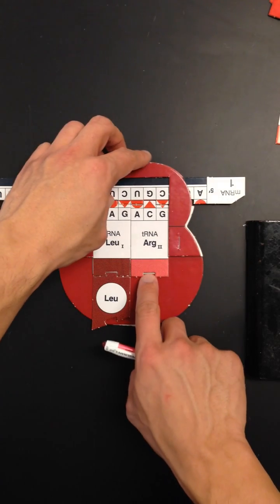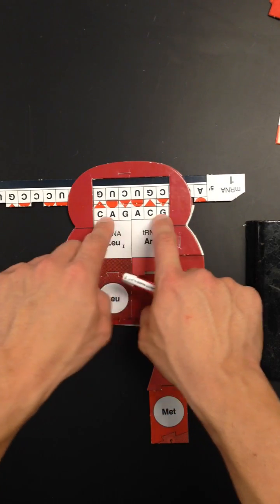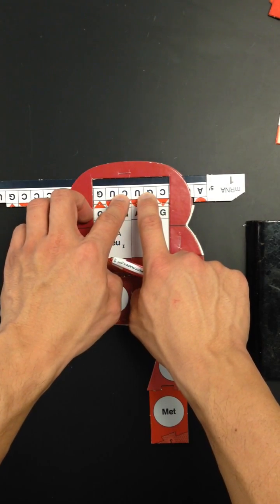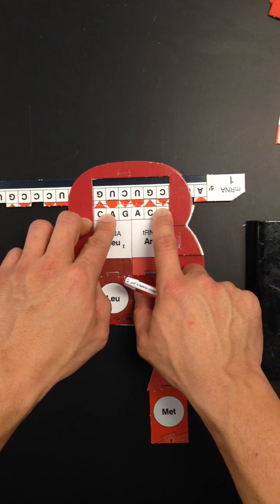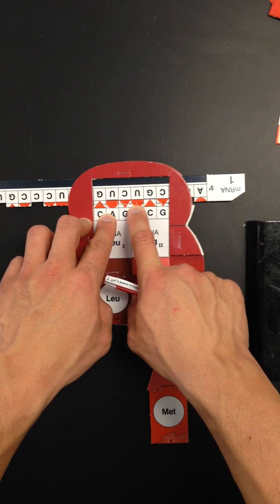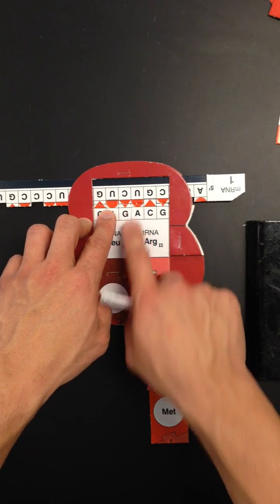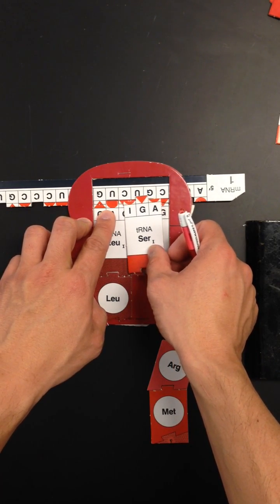One other thing: when you match up your transfer RNAs, the anticodons, to the messenger RNA codons, if you're not quite sure if it fits or if you're not quite sure if it's the right one, just double-check the shapes here. If your shapes make triangles or semicircles, then you have the right transfer RNA in the ribosome. That's one way to double-check yourself, especially if you are using the inosine bases in your transfer RNA.